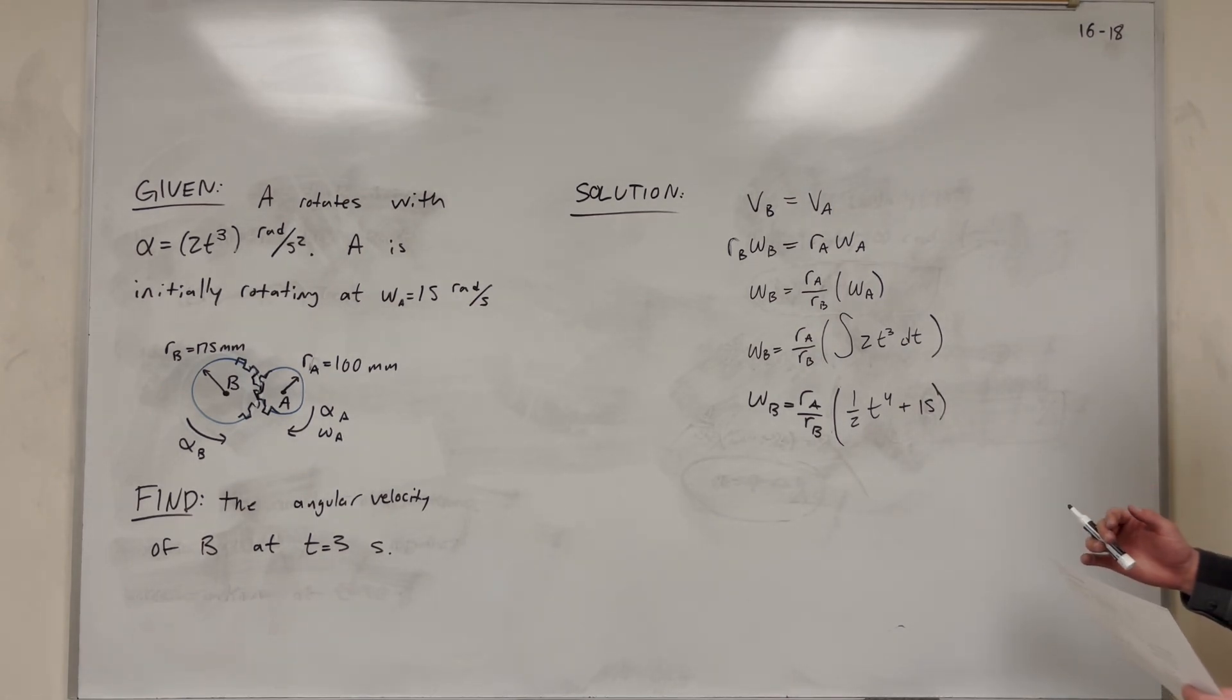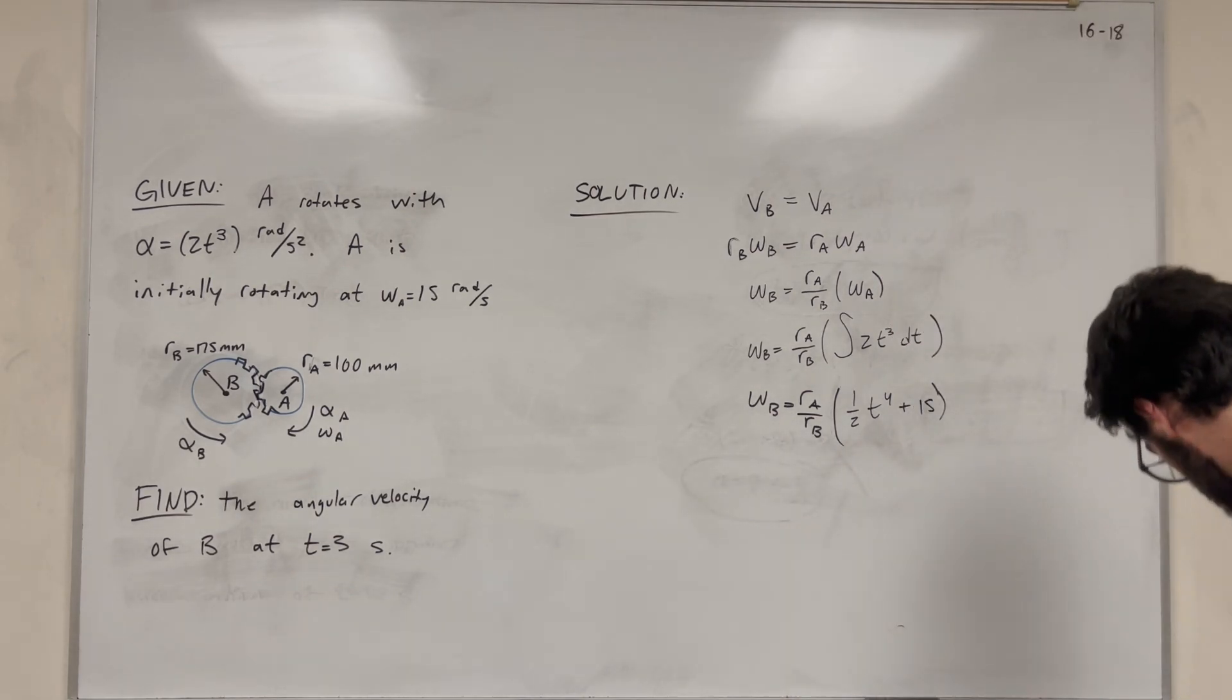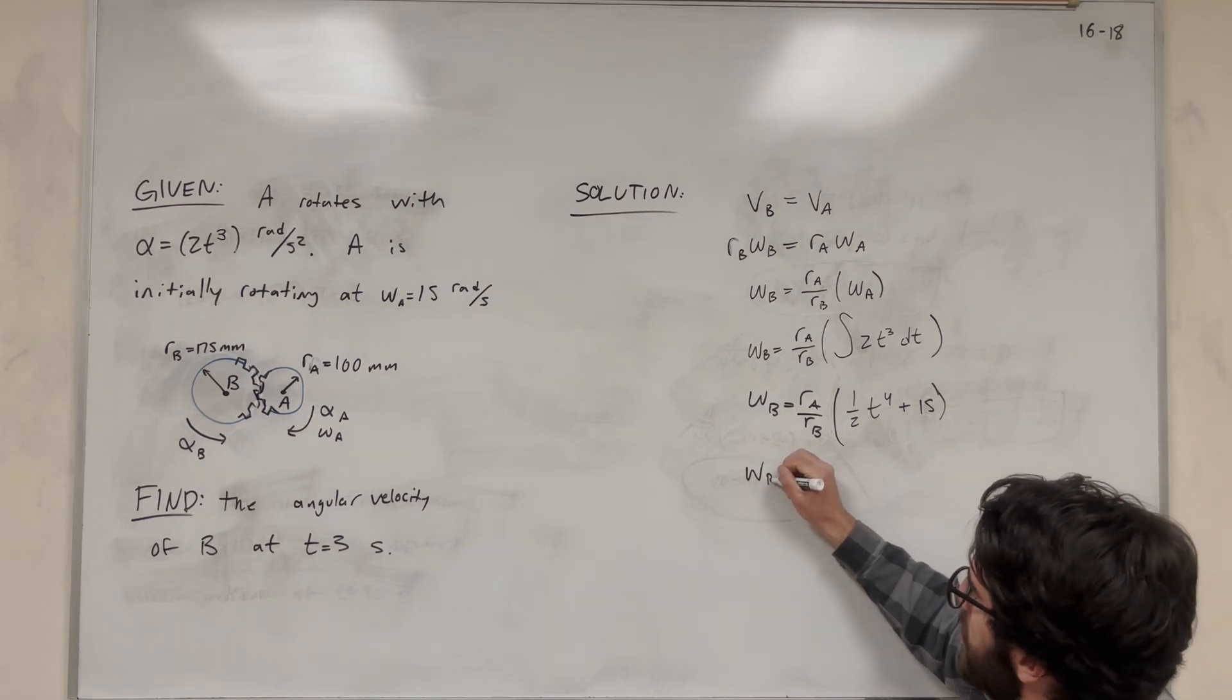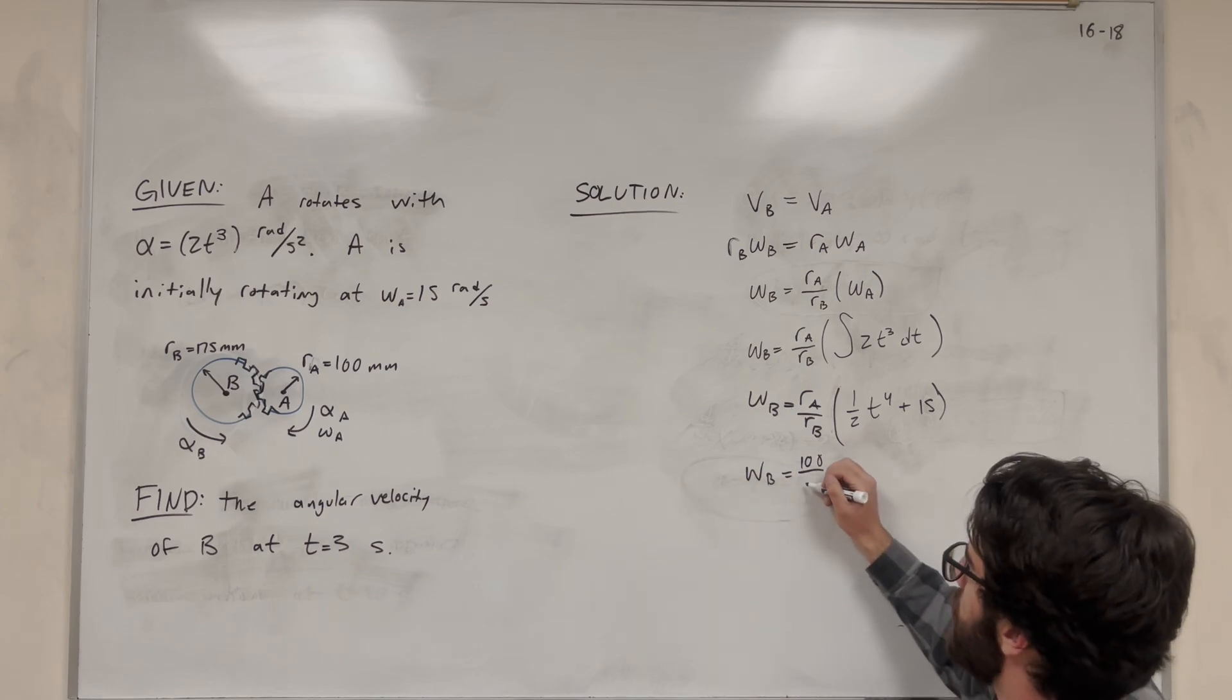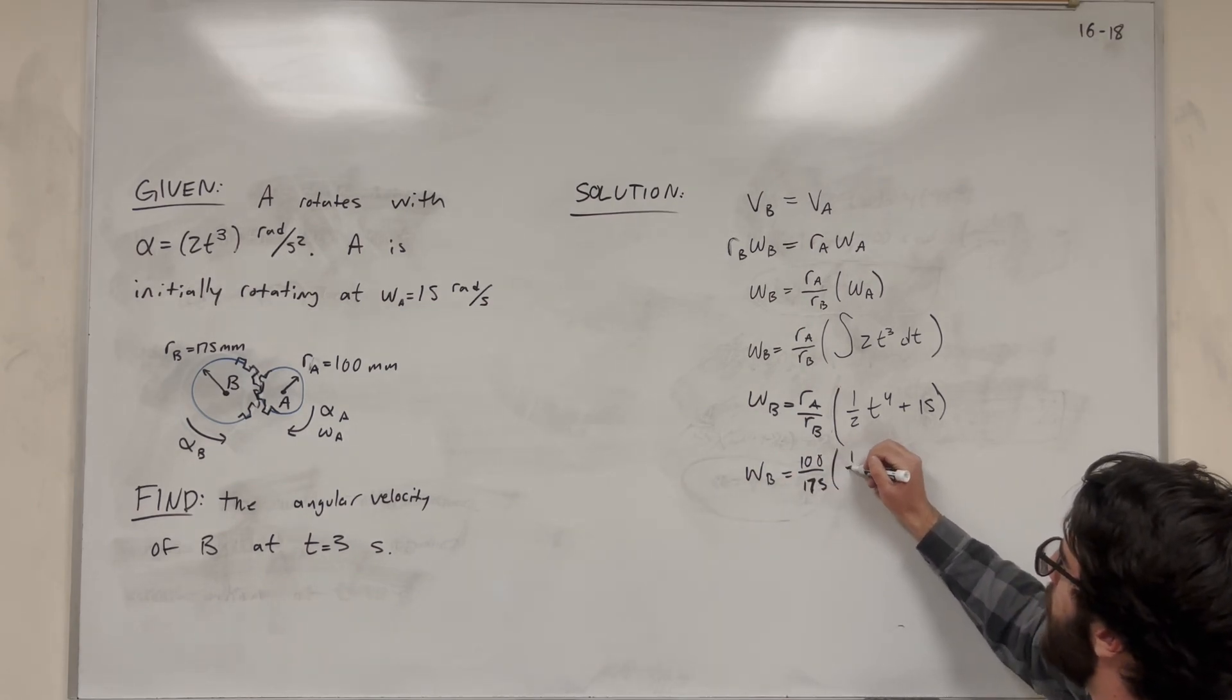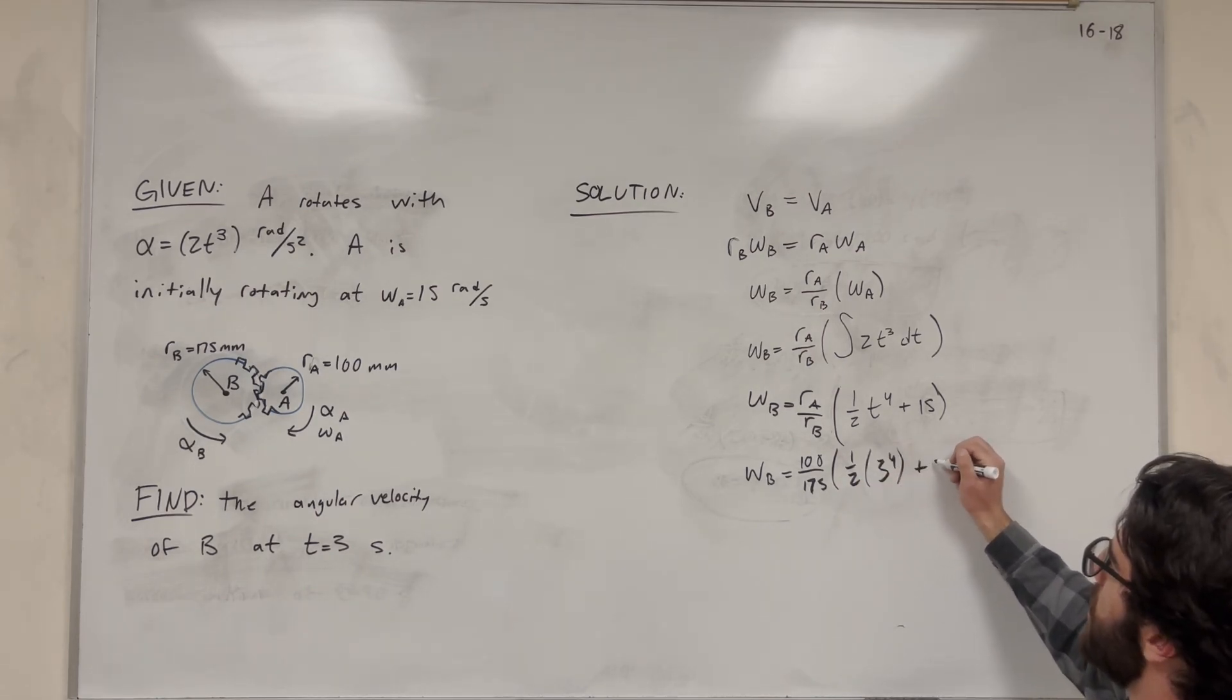Okay, so then all we have here is to plug in our time. We're looking for 3 seconds. So let's plug in our radiuses too. So what's radius of A? Well, radius of A is 100 millimeters. And radius of B is 75. Then we're going to plug in 1/2, 3 to the fourth, plus 15.